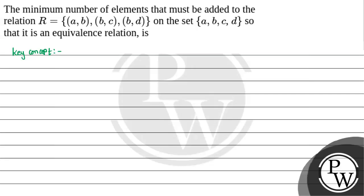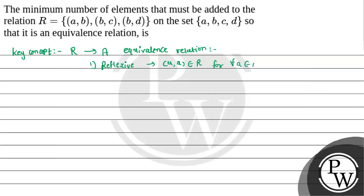The key concept to solve this question: a relation R defined on a set A is called an equivalence relation if it satisfies three conditions. First, it is reflexive — meaning order pair (a,a) belongs to R for all a in A. Second, it is symmetric — meaning if (a,b) belongs to R, then (b,a) also belongs to R.